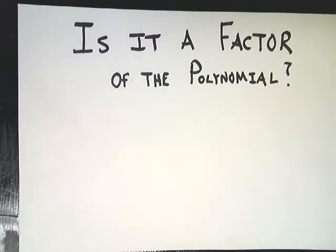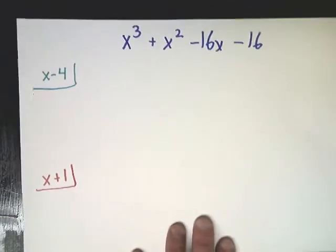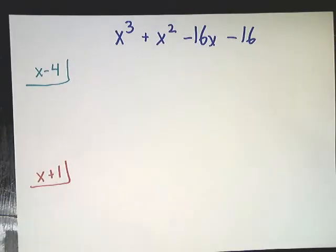There's two ways that you can do it. The first is, of course, you can use long division and then the other is in some situations you're allowed to use synthetic division. In order for it to be a factor, you have to have no remainder.